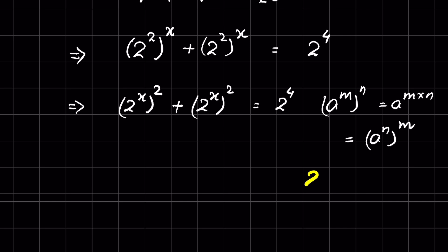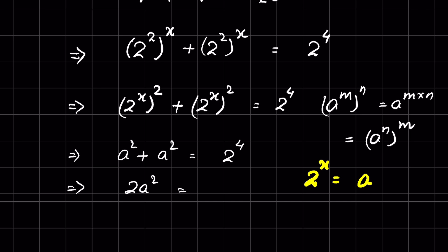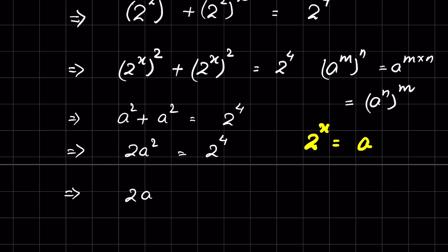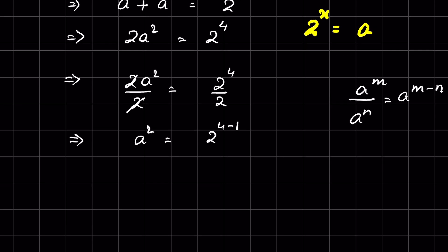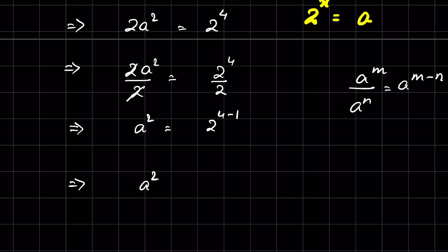Let 2 raised to the power x equal a. Then we have a squared plus a squared equals 2 raised to the power 4, which gives 2a squared equals 2 raised to the power 4. Dividing both sides by 2, and using the rule a raised to power m upon a raised to power n equals a raised to power m minus n, we get a squared equals 2 raised to the power 4 minus 1.